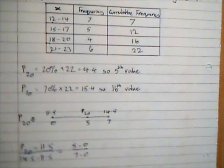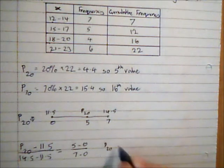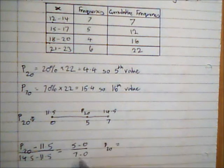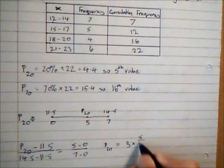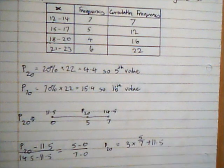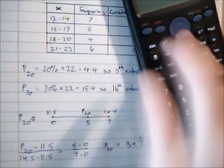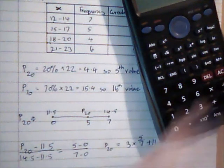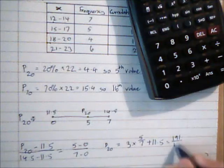So now I can evaluate P20. So P20 is going to be 14.5 minus 11.5 is 3, 5 over 7. So it is 3 times 5 over 7 plus 11.5. That gives me 191 over 14, which I am going to leave like that for the moment.